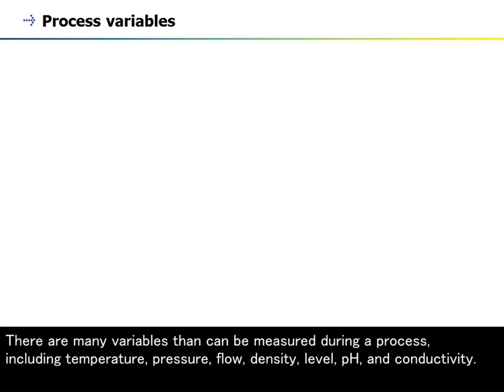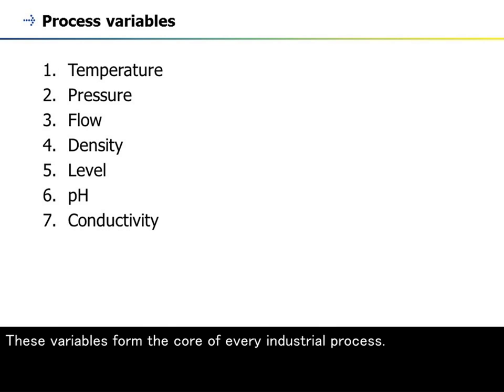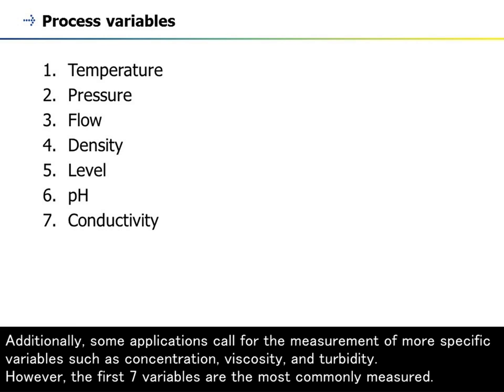There are many variables that can be measured during a process, including temperature, pressure, flow, density, level, pH, and conductivity. These variables form the core of every industrial process. Additionally, some applications call for the measurement of more specific variables such as concentration, viscosity, and turbidity. However, the first seven variables are the most commonly measured.